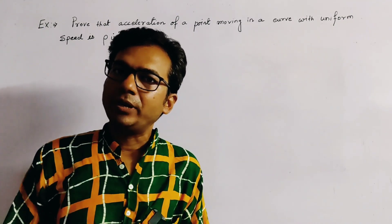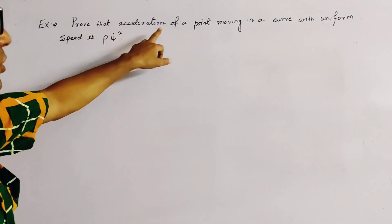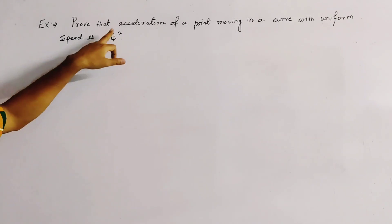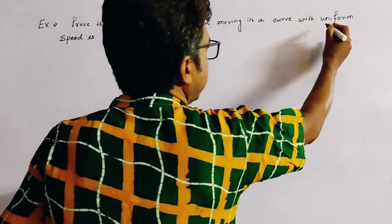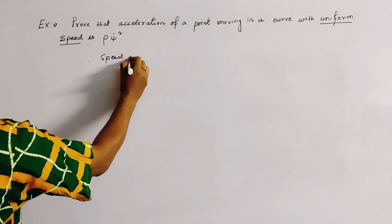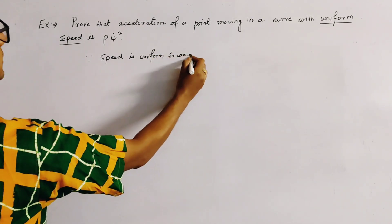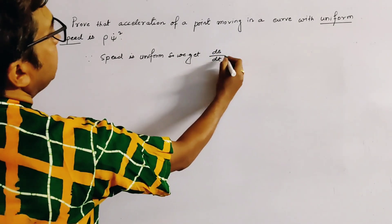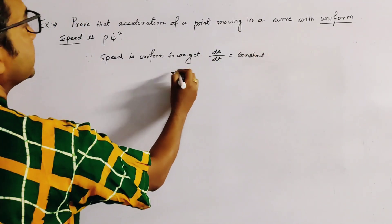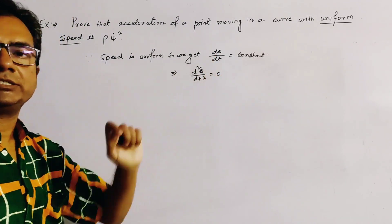This problem is from tangential and normal acceleration in plane curves. We are to prove that the acceleration of a point moving in a curve with uniform speed is ρ·ψ̇². Since speed is uniform, ds/dt is constant, and differentiating gives d²s/dt² = 0.